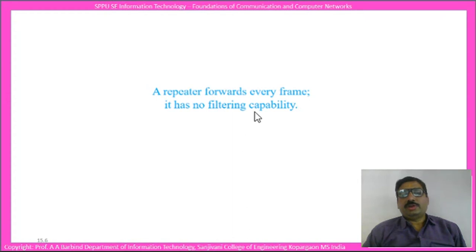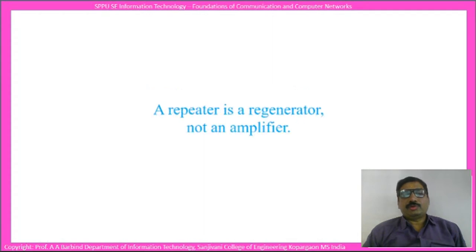The repeater forwards every frame and has no filtering capacity — whatever input it gets, it forwards to the other port. It has two ports, and whatever it receives on one port it forwards as-is to the other port. A repeater is a re-generator, not an amplifier.